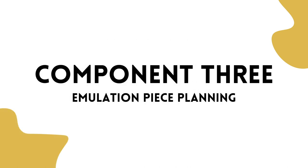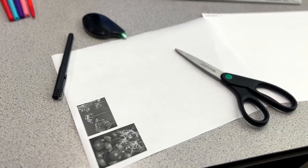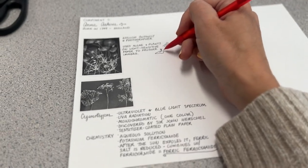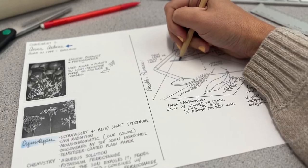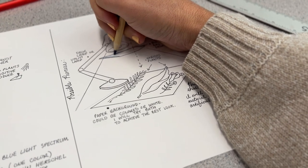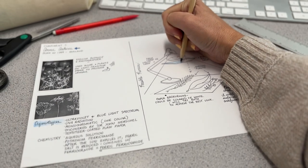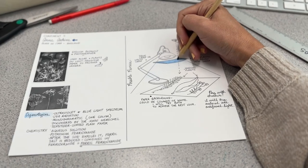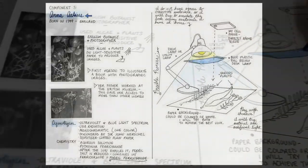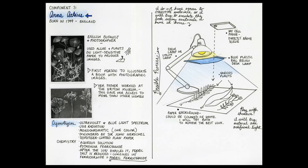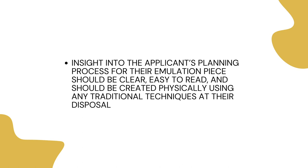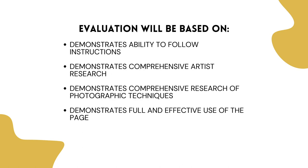Component 3: Emulation Piece Planning. Applicants will create a full page of planning for their emulation piece, which may include artist research, photographic technique research, influences, sketches of composition ideas, and a list of materials and lighting setup. Using a sheet of 8.5 by 11 inch paper or similar, applicants will gather their information, plans, sketches, research, and other important materials and arrange it on the paper. The planning should be full, comprehensive, and very informative. Insight into the applicant's planning process should be clear, easy to read, and created physically using any traditional techniques at their disposal.